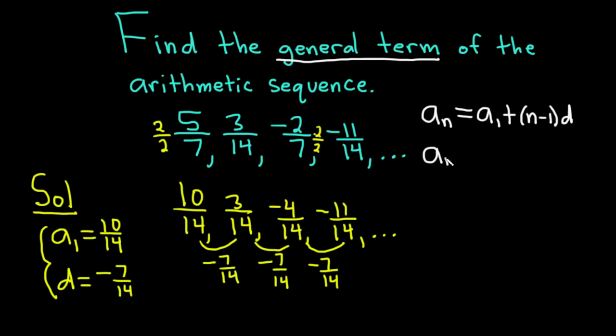So we have a sub n is equal to, so a sub 1 we said was 10 over 14. We replace a sub 1 with 10 over 14.